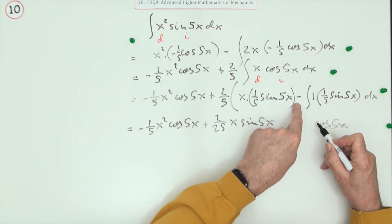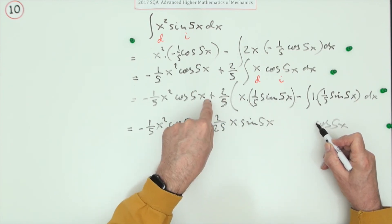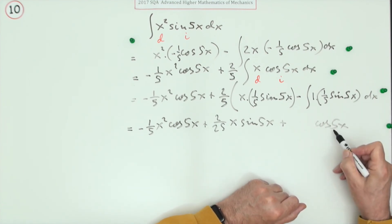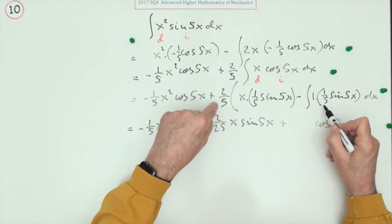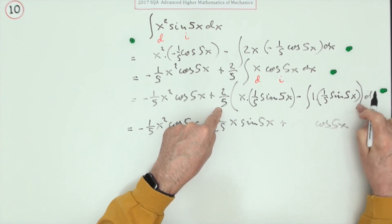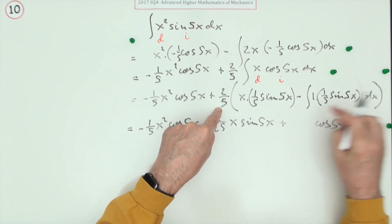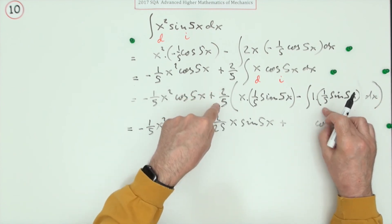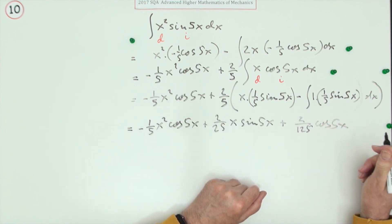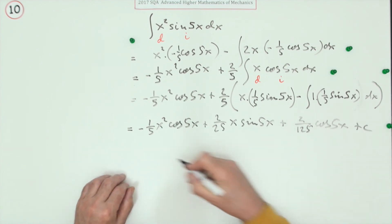It would have been divided by five, so instead of one fifth it'll be one over 25, and then finally, oh I must do a bracket here, not there. Must do a bracket here and then finally multiplied by two fifths which makes it two over 125. And since I've finished the integrations, plus c.